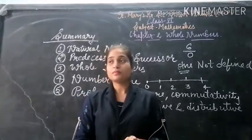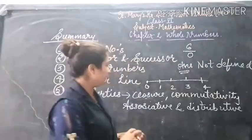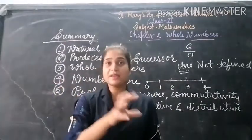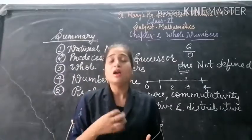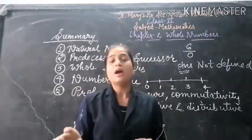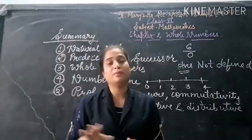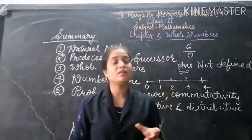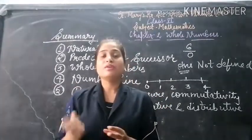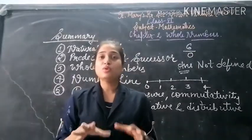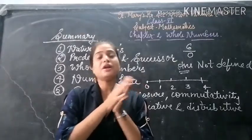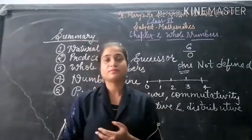Commutativity property holds for addition as well as multiplication. In multiplication, suppose the numbers are 2 and 6: 2 times 6 is 12, and when we rearrange to 6 times 2, the answer is still 12. The arrangement does not matter and we get the same answer. But this does not hold for subtraction and division. Commutativity property is followed under multiplication and addition.